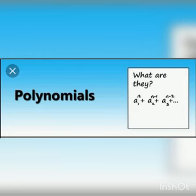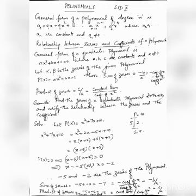So in general, the polynomial of degree n has the form: a₀ + a₁x + a₂x² + ... + aₙ₋₁xⁿ⁻¹ + aₙxⁿ, where a₀, a₁, ..., aₙ are constants and aₙ should not be 0.